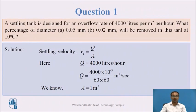Let's have the first question. A settling tank is designed for an overflow rate of 4000 liters per meter square per hour. What percentage of particles of diameter 0.05 mm and 0.02 mm will be removed in this tank at 10 degree Celsius? It has been asked whether the discrete particles of diameter 0.05 mm and 0.02 mm can settle down, and if they can, then what is their percentage?